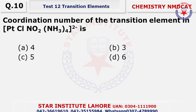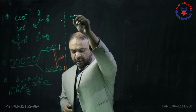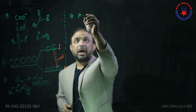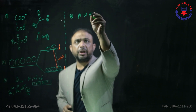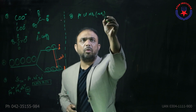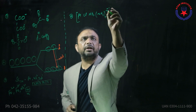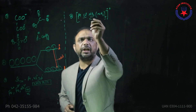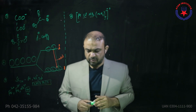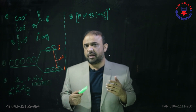Question number ten: the coordination number for the transition metal complex — look at the complex written: [Pt(Cl)(NO2)(NH3)4] with a charge of minus 2. The number of ligands attached is 6, which is mentioned in choice delta. The number of ligands attached is called the coordination number.